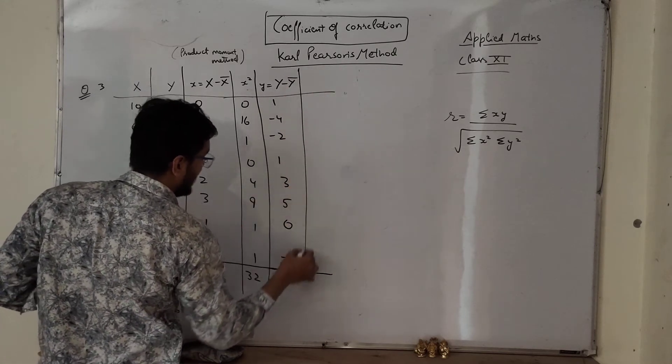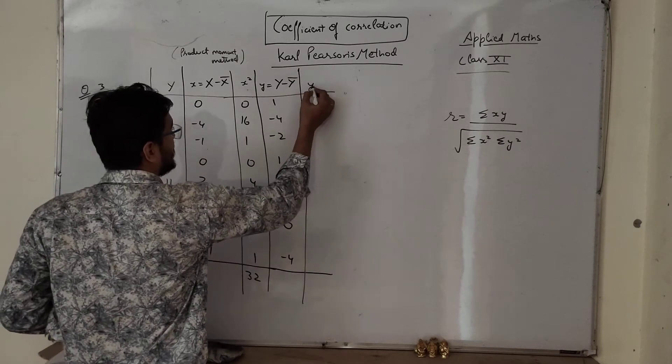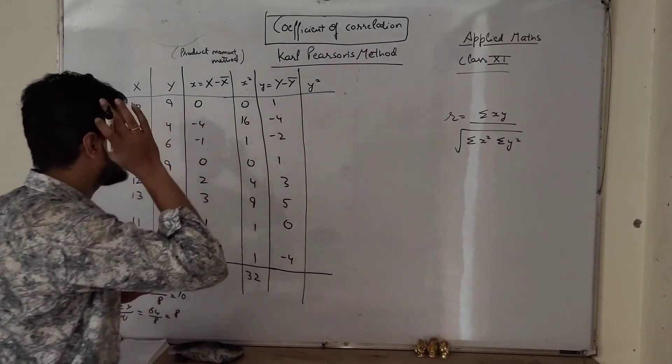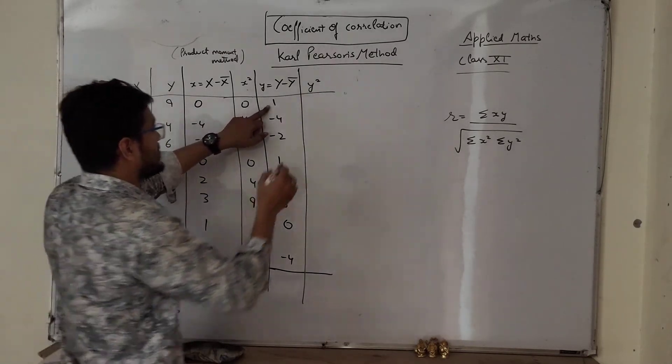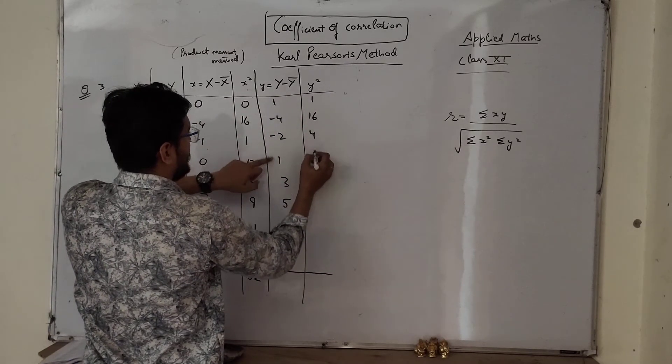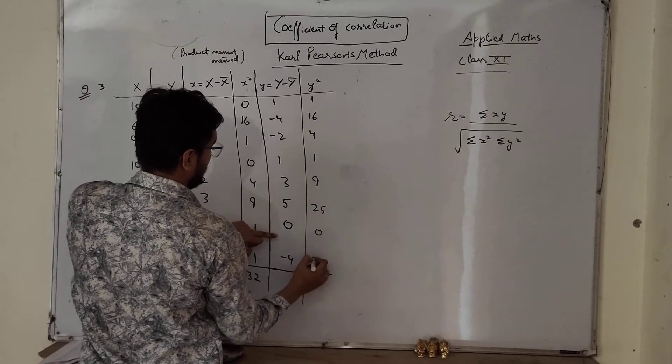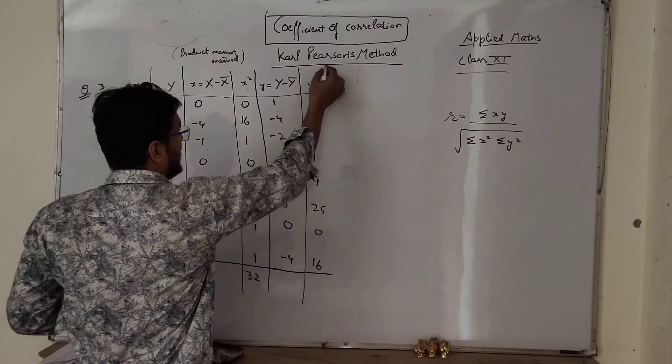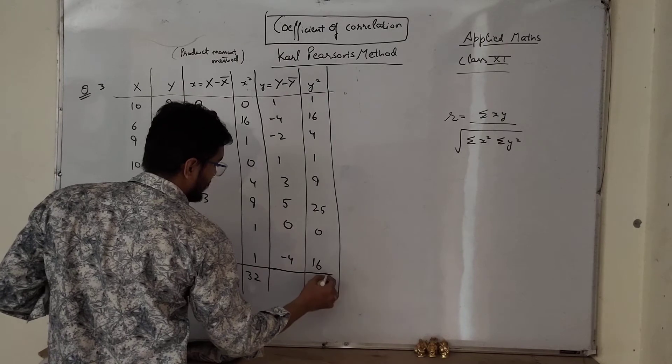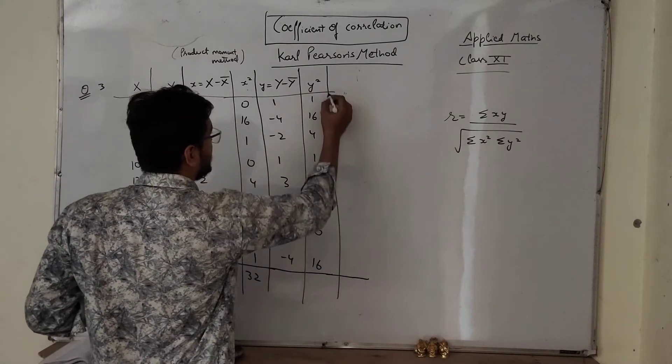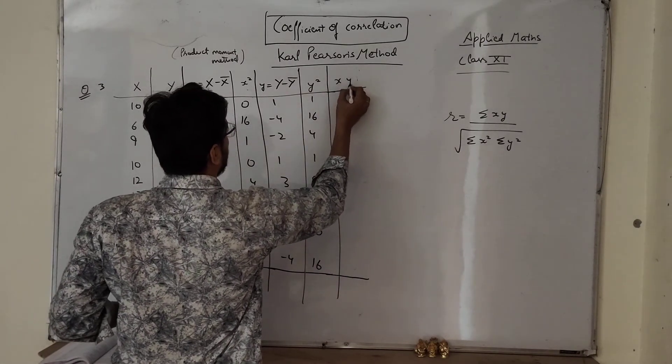Next y square. So the formula requires y square also. So y square now: 1 square is 1, 16, 4, 1, 9, 25, 0, 16. Next is xy, product of both x and y, x multiply by y.